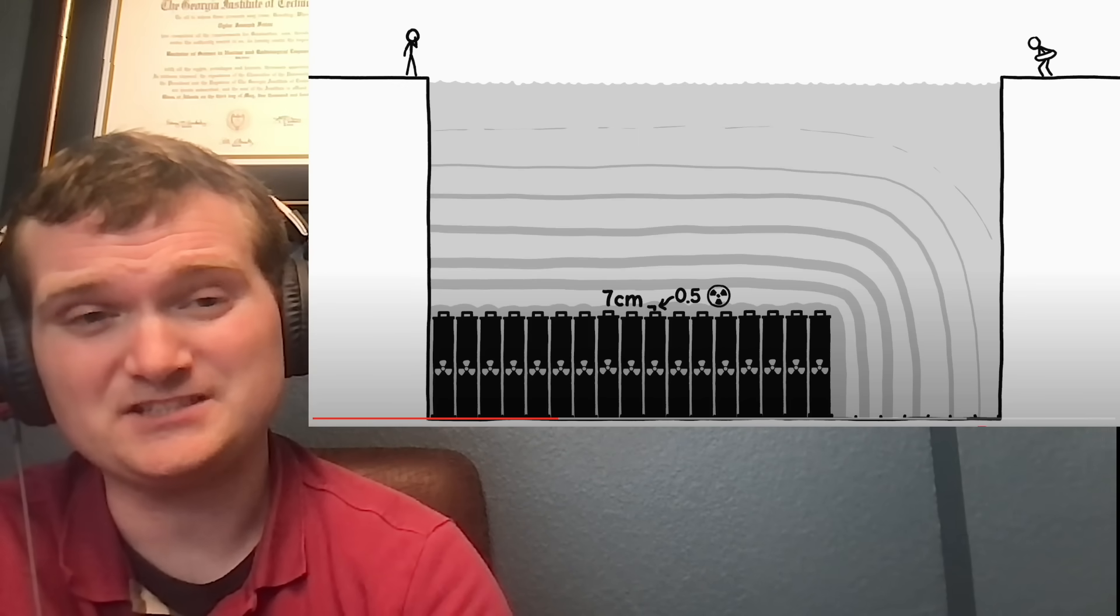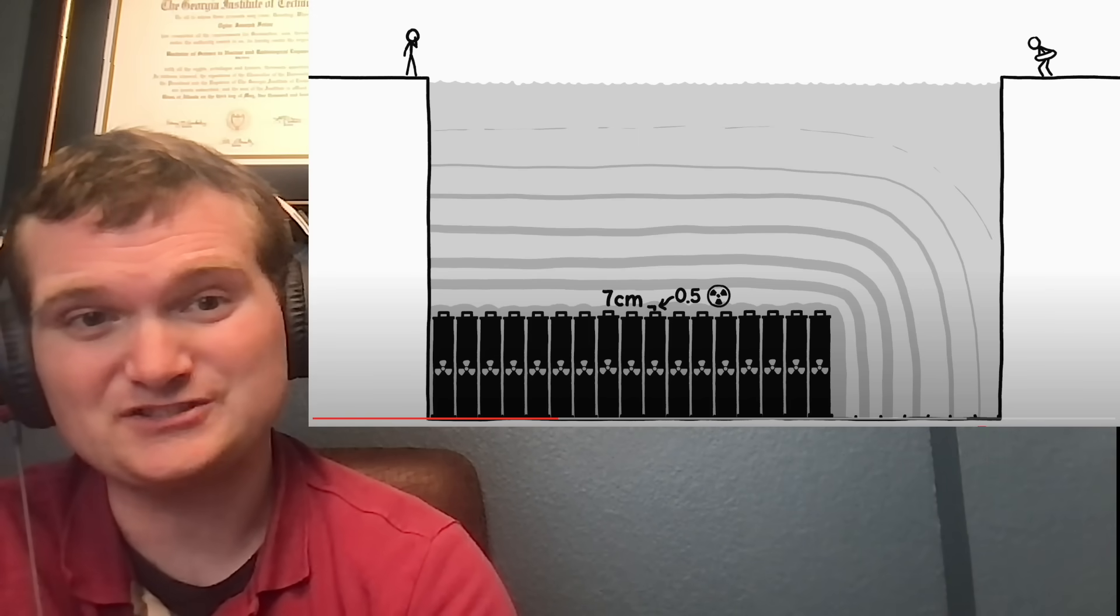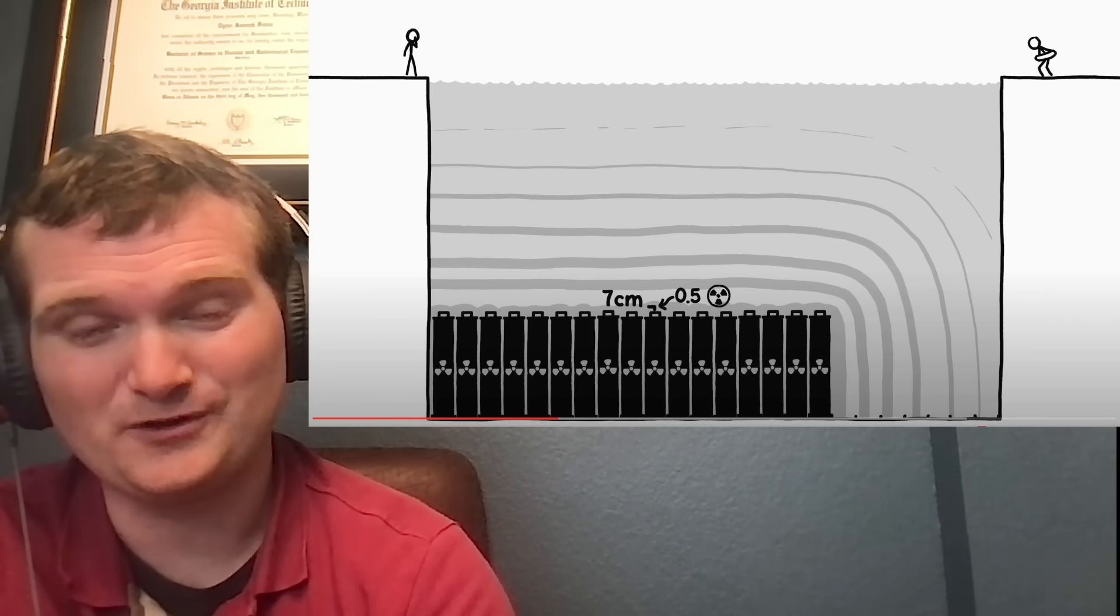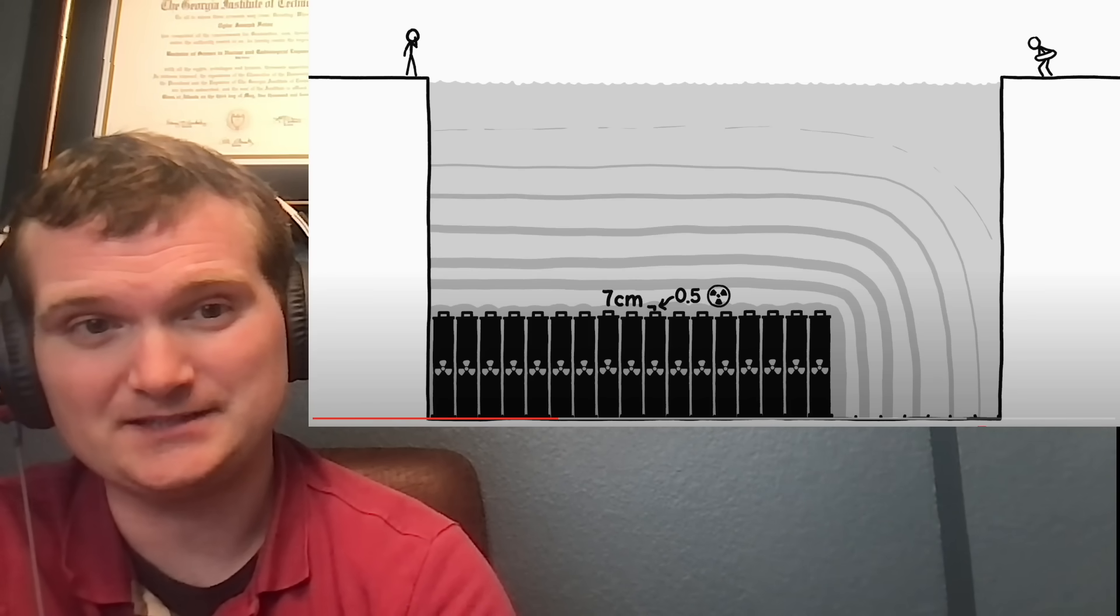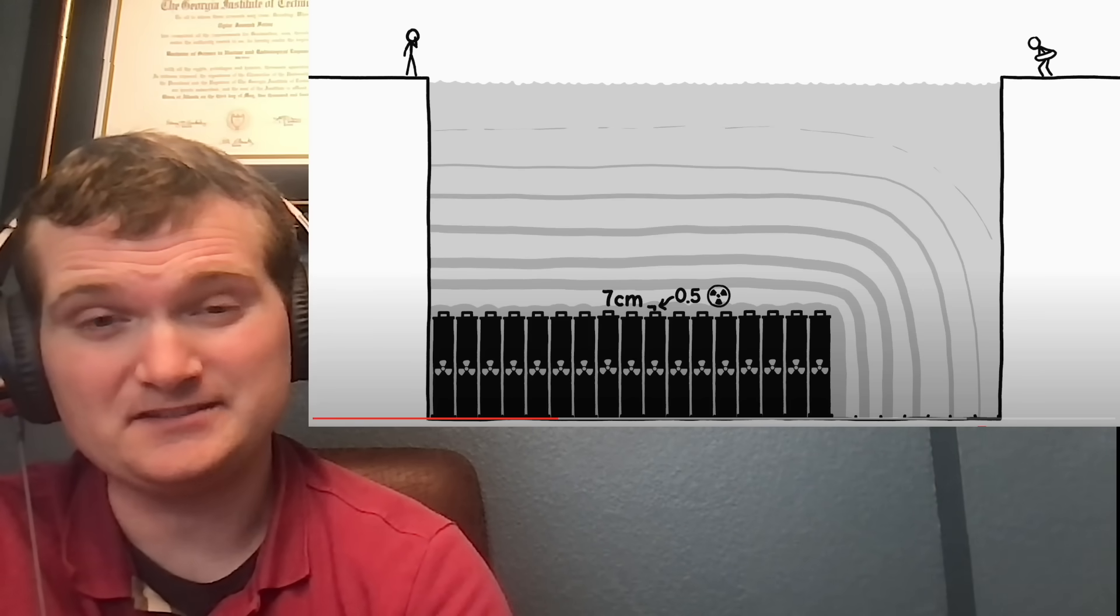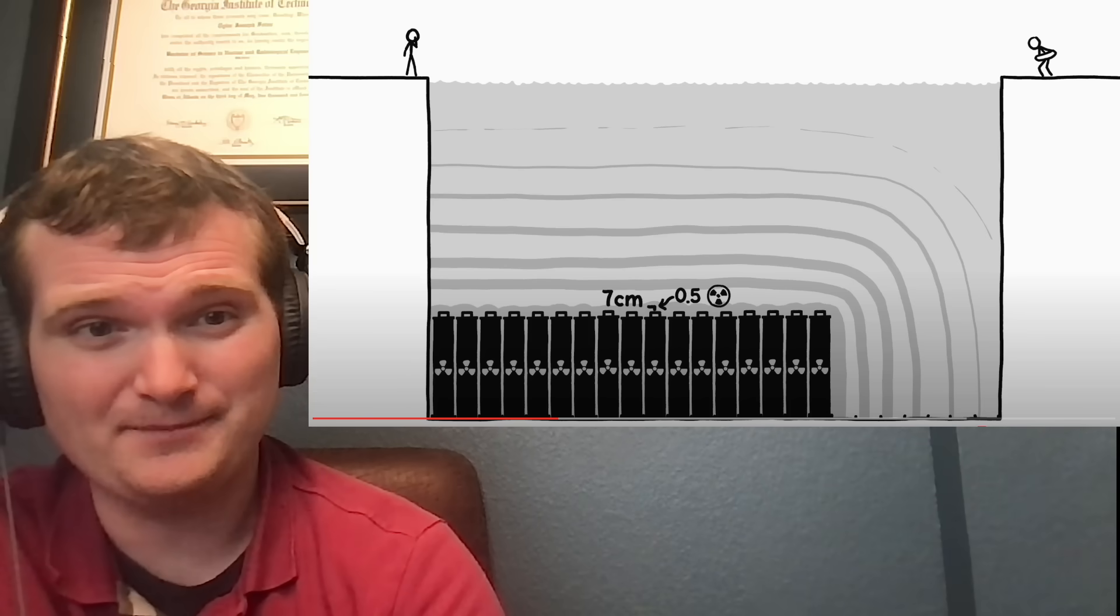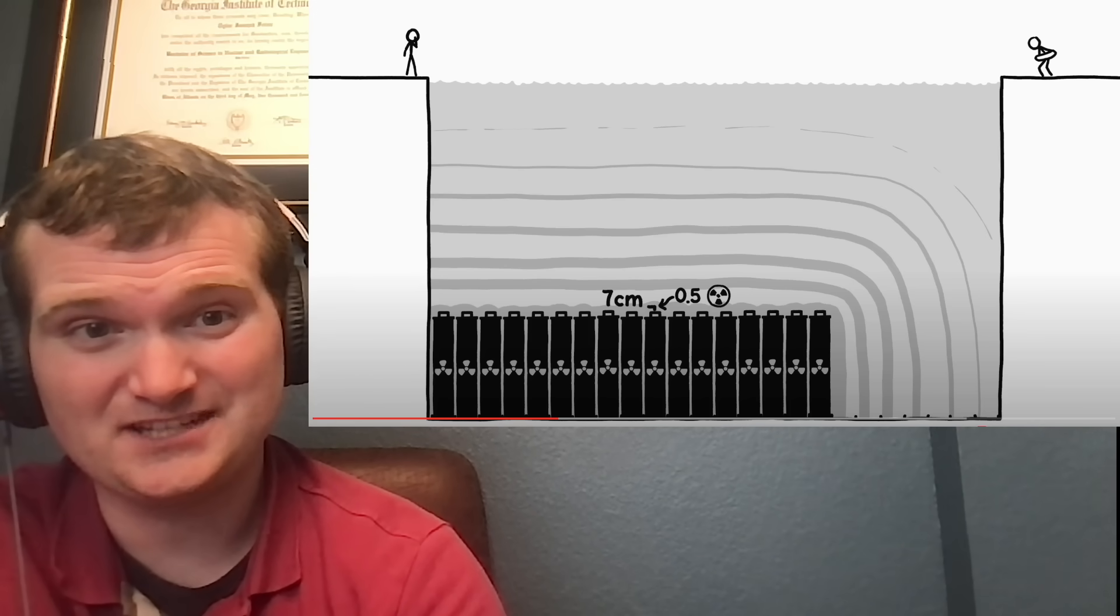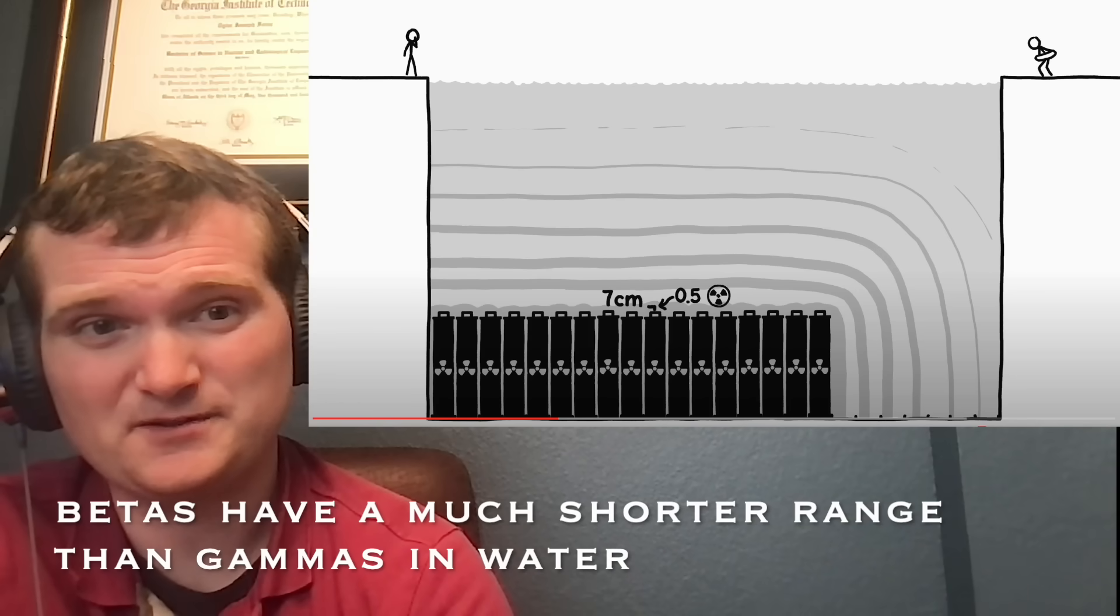However, after fuel has been used in the nuclear power plant, the fission products are where the most dangerous levels of radioactivity come from. Things like strontium-90, cesium-137, iodine-131, and a whole bunch of other fission products that are typically beta and gamma emitters. That is what's going to give you a high dose of radiation. And that is what they're talking about in this video. So this halving in seven centimeters. The rule of thumb I'm used to for gammas is five centimeters. So this is actually being a bit conservative. But overall, so far, they're doing pretty good.